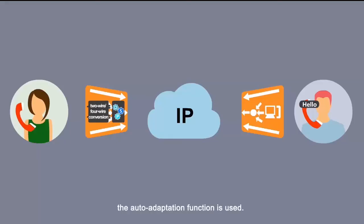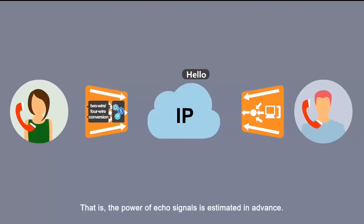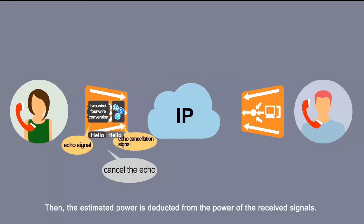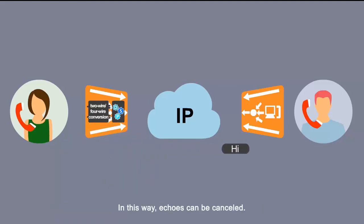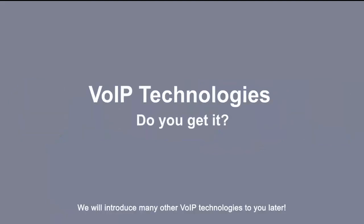For echo cancellation, the auto-adaptation function is used. That is, the power of echo signals is estimated in advance, then the estimated power is deducted from the power of the received signals. In this way, echoes can be cancelled. We will introduce many other VOIP technologies later.